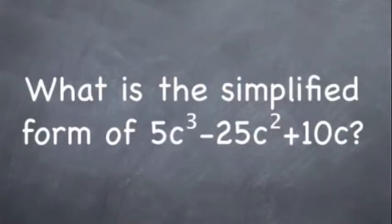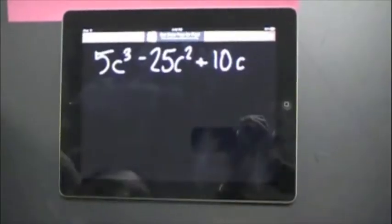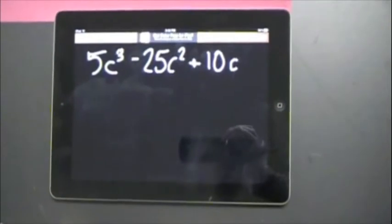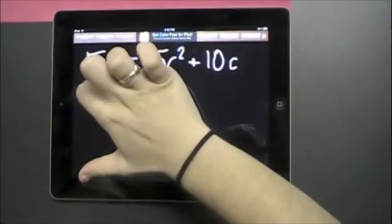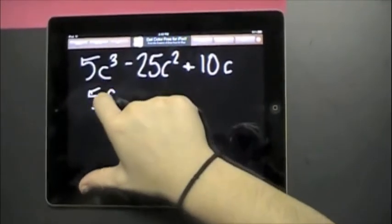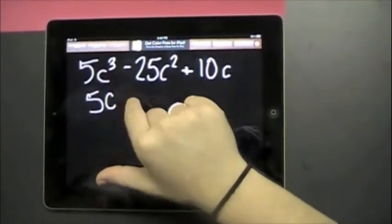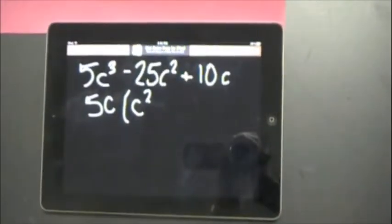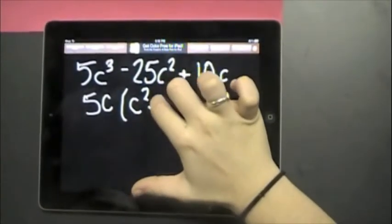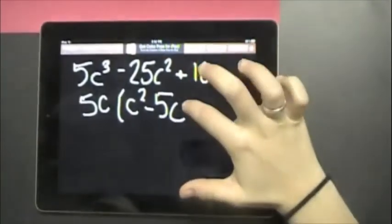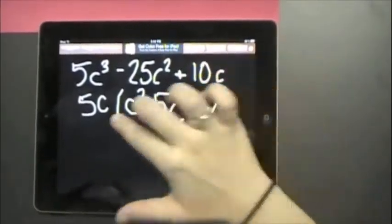5C cubed minus 25C squared plus 10C. What do 5, negative 25, and 10 all have in common? They're all divisible by 5. And look, there's a C in all three terms. So, 5C cubed divided by 5C is C squared. Negative 25C squared divided by 5C is negative 5C. And 10C divided by 5C is 2. This must be my answer.